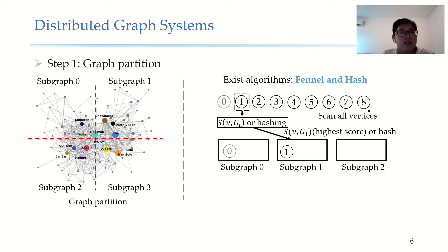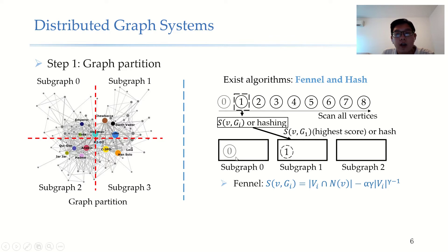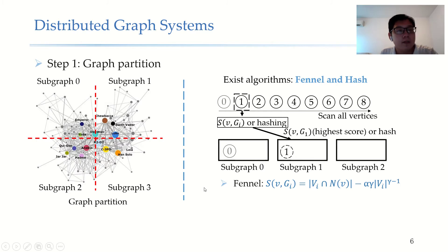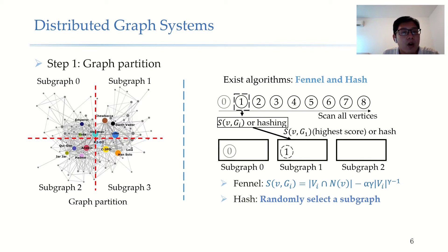Another two widely used algorithms are Fennel and Hash. They both sequentially add vertices by vertex ID and compute a score for each subgraph. For Fennel, the score S(v,i) contains two terms: the first term denotes the common neighbors between vertex v and subgraph i — if this number is large, assigning vertex v to subgraph i minimizes edge cuts. The second term is a penalty factor to achieve vertex-balanced partition. Fennel adds each vertex to the subgraph with the highest score. For Hash, it just randomly chooses a subgraph and adds the vertex to it. Because of the randomness, the subgraph locality is very poor, so it causes high edge cuts.